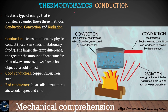Next, some thermodynamics — heat transfer. The three main ways heat transfers are conduction, convection, and radiation. Conduction is the transfer of heat by physical contact through a solid medium. Good conductors include copper, silver, iron, and steel. Bad conductors — also called insulators — include air, wood, paper, and clothing.